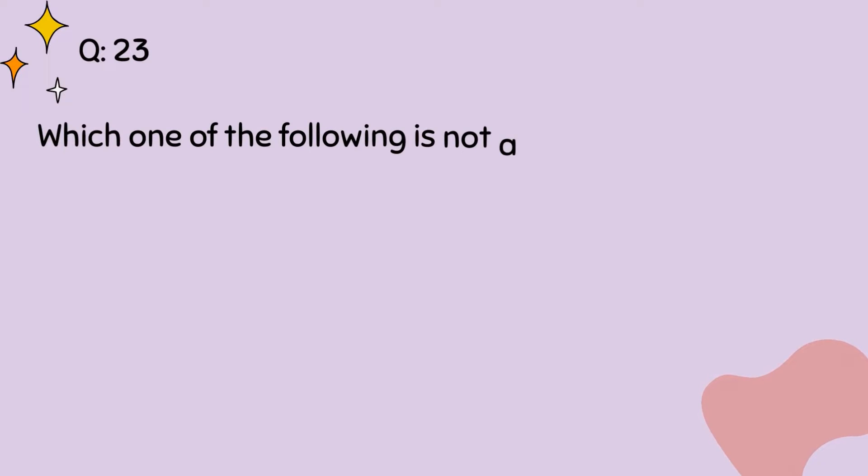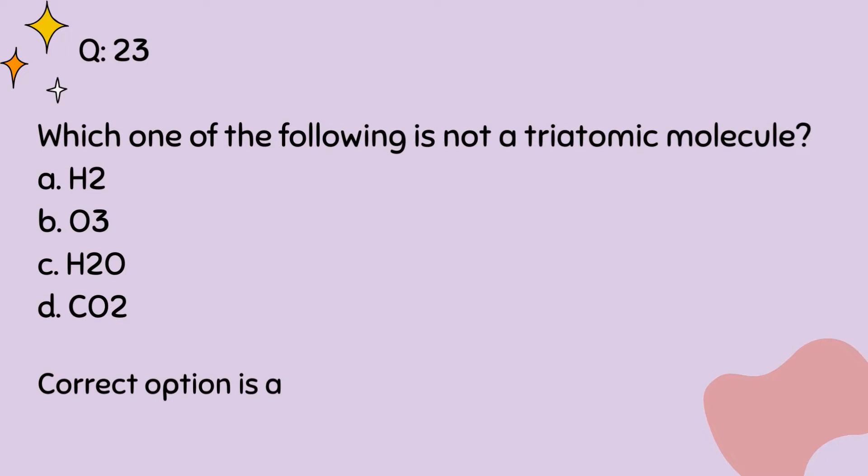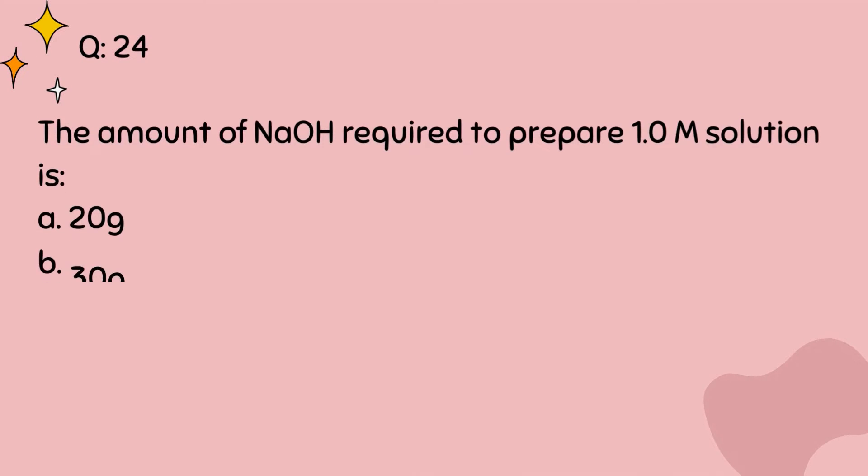Question number 23. Which one of the following is not a triatomic molecule? A, H2, B, O3, C, H2O, D, CO2. Correct option is A. Question number 24. The amount of NaOH required to prepare 1.0 molar solution is: A, 20 grams, B, 30 grams, C, 40 grams, D, 80 grams. Correct option is C.